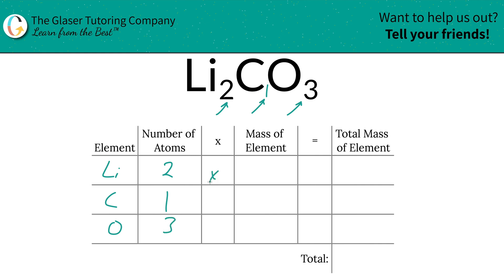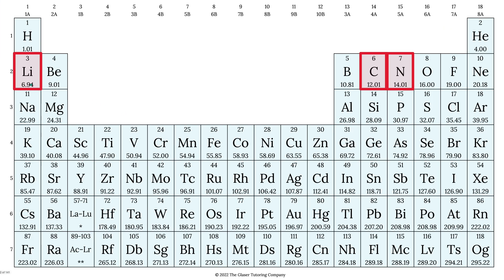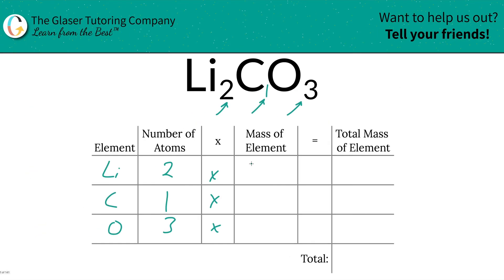Then we're going to multiply each of those number of atoms by the mass of the element. These masses are found on the periodic table. So the mass of lithium is 6.94, carbon is 12.01, and oxygen is 14.01. Let's write that in: 6.94, 12.01, and 14.01.